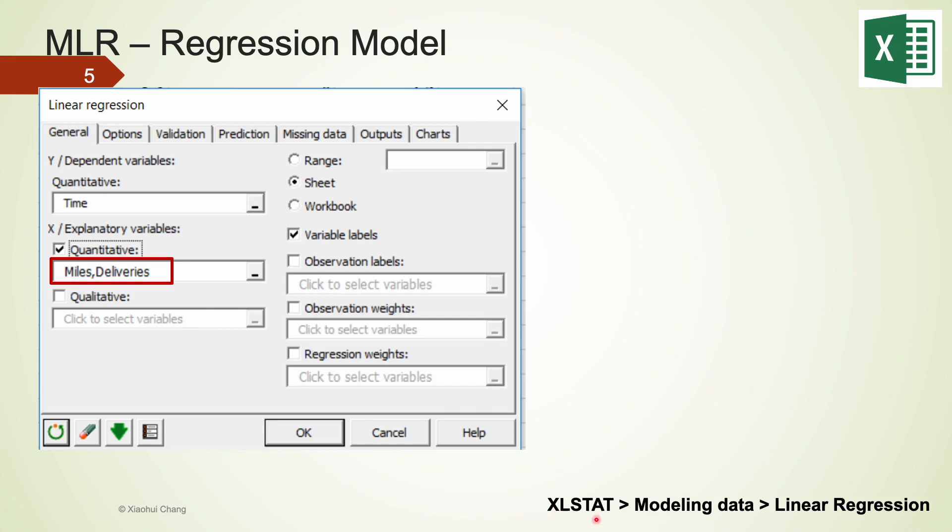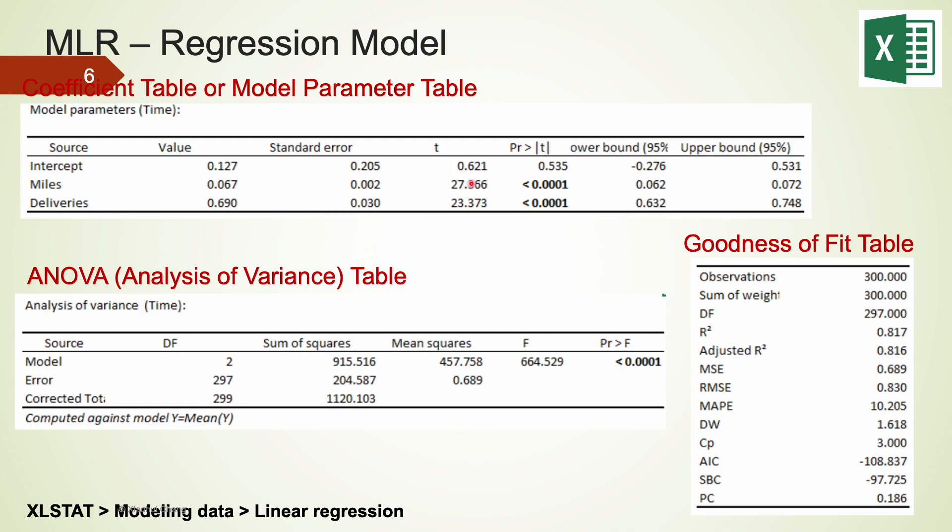The steps in XLSTAT for the multiple linear regression are identical to that for simple linear regression. Just to be sure that you select all independent variables as your x. If you have any questions, please refer to my linear regression using XLSTAT video posted on YouTube that is also linked on this screen. Again, there are three tables generated using XLSTAT: the coefficient table, the ANOVA table, and also the goodness of fit table. We're going to talk about each of them in more detail later in this video.